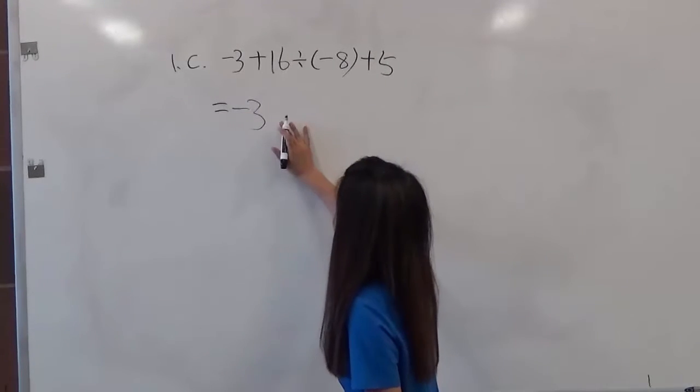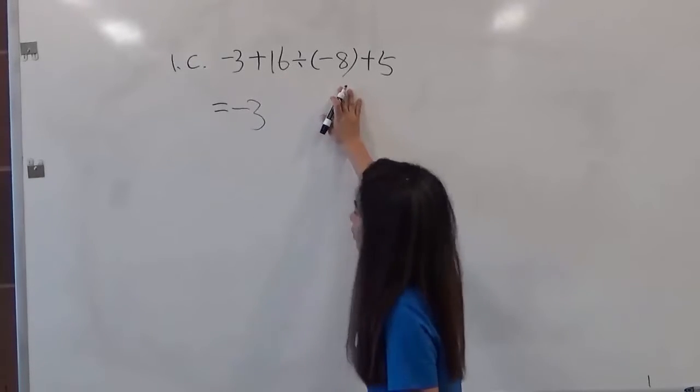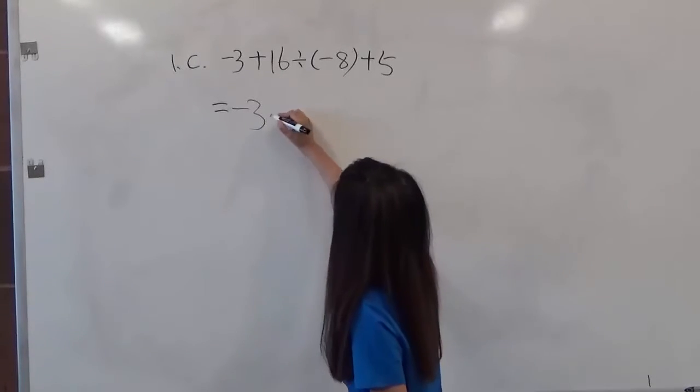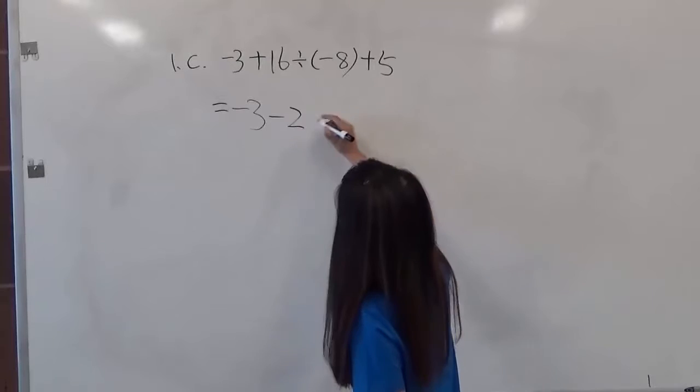First, we just copy down the negative 3 and 16 divided by negative 8, which is negative 2. Then we plus 5.